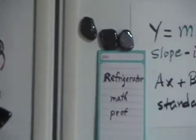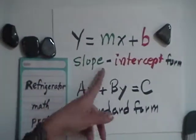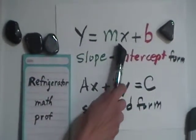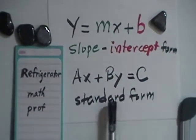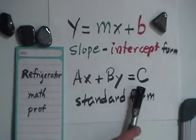Usually the final answer that we'll be asked to give is the slope-intercept form, y equals mx plus b, or we might be asked to write our answer in standard form, ax plus by equals c.